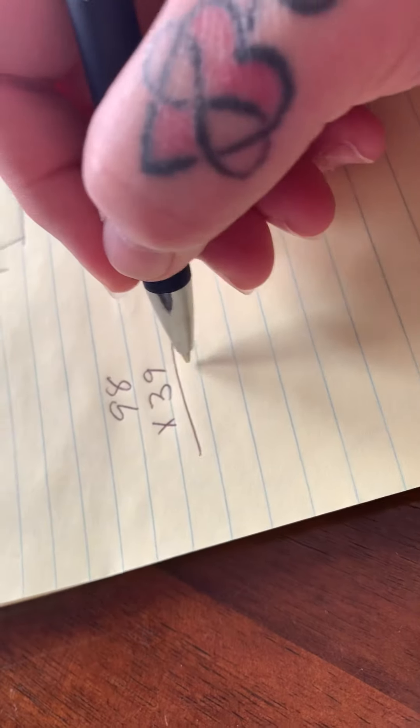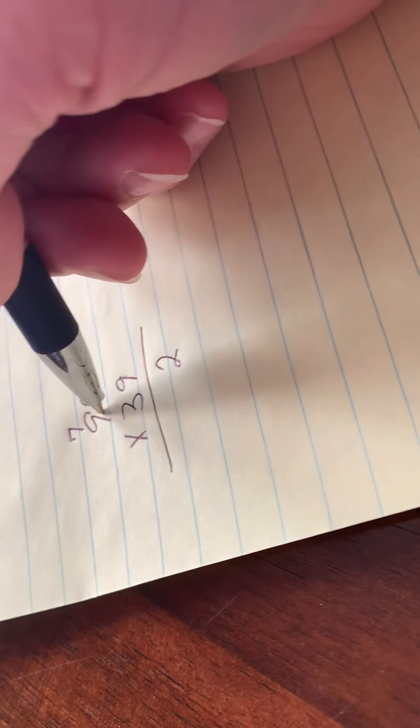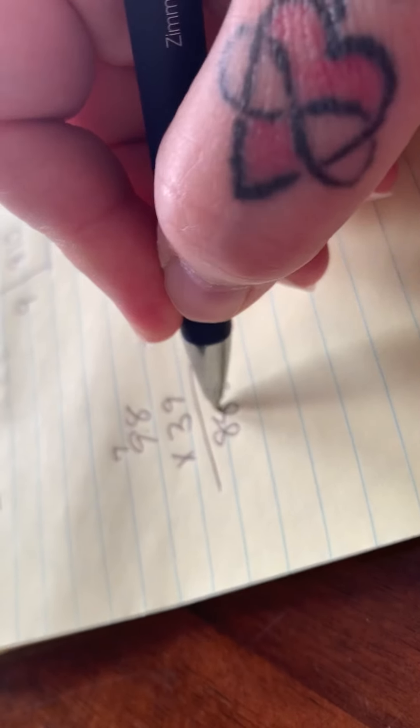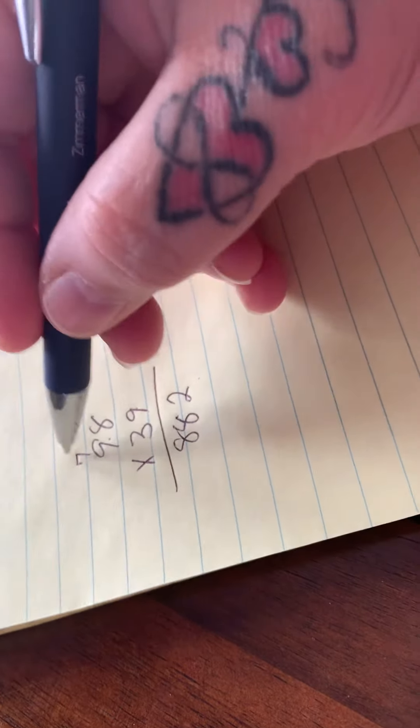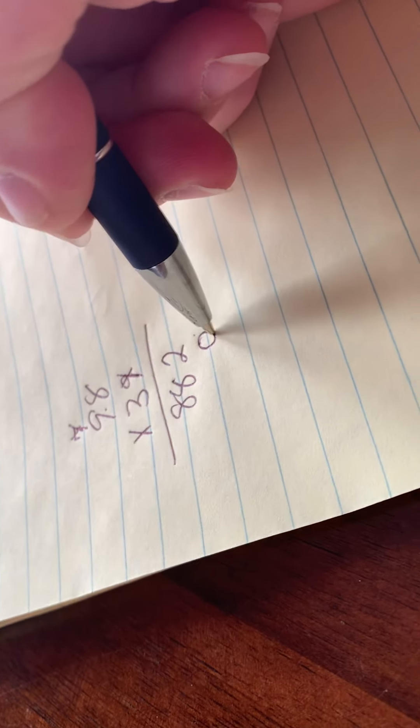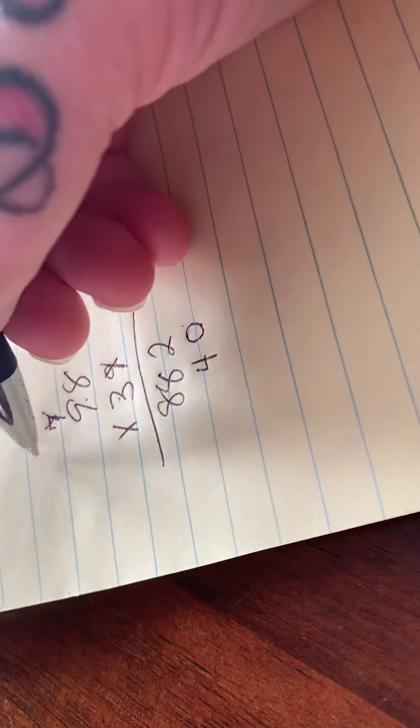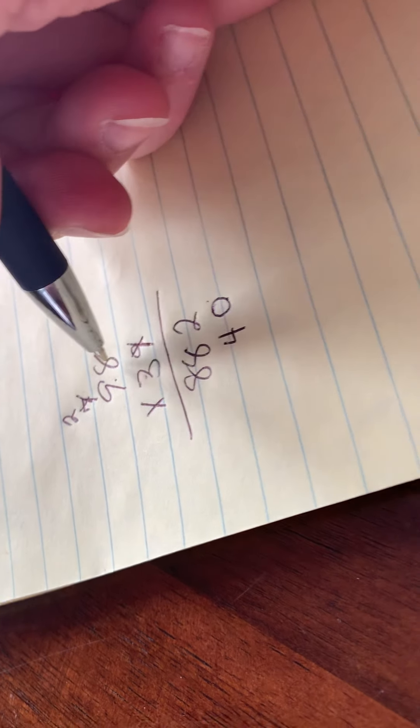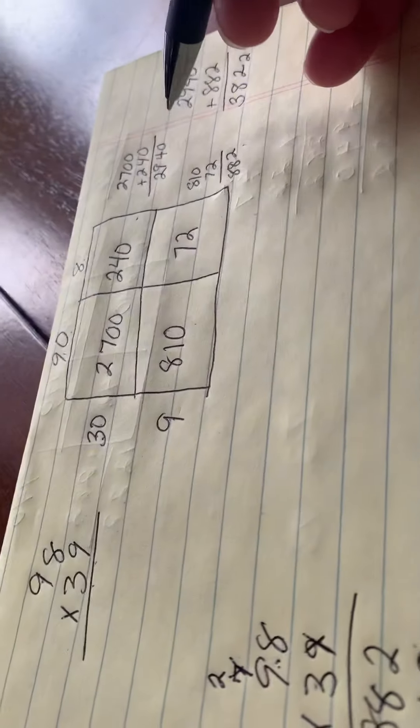So we have 98 times 39. 9 times 8 is 72, carry my 7. 9 times 9 is 81 plus 7 is 88. Oh, look, same numbers. We don't need the ones place anymore, so we're going to start in our tens place. Put that placeholder 0 there. 3 times 8 is 24, carry my 2. 3 times 9 is 27 plus 2 is 29. Oh, we still have the same number. Look, right there.